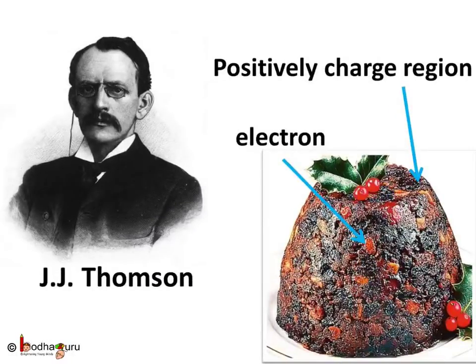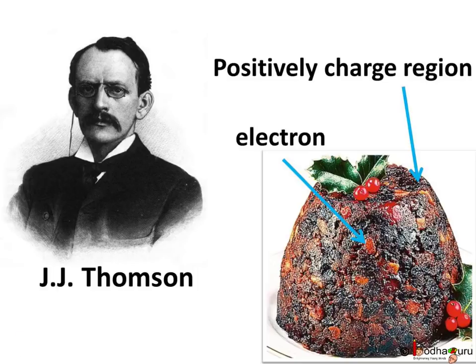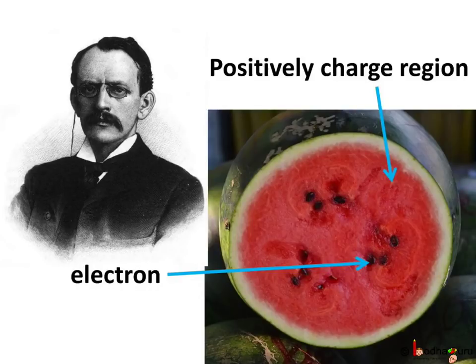J.J. Thomson, who was the first to propose a model for the structure of an atom, said it is like a Christmas pudding. The electrons are like dry fruits in a positively charged sphere or you can also think of it as a watermelon. Positive charges are spread all over the red edible part and the electrons are like the seeds in the positively charged sphere.